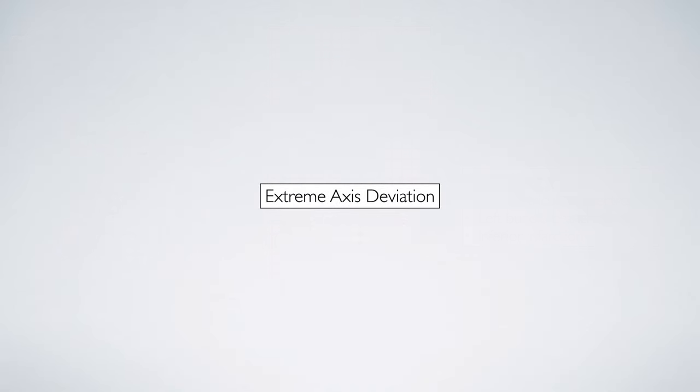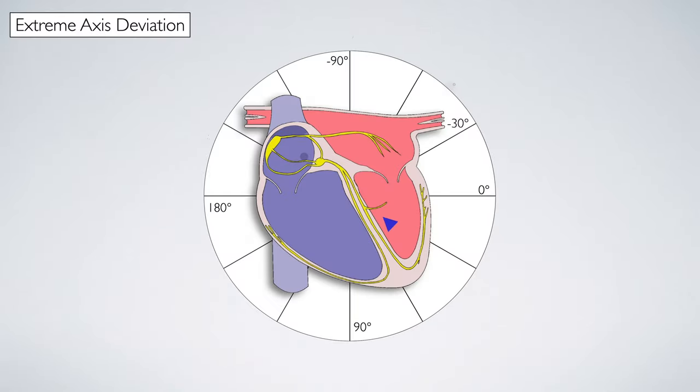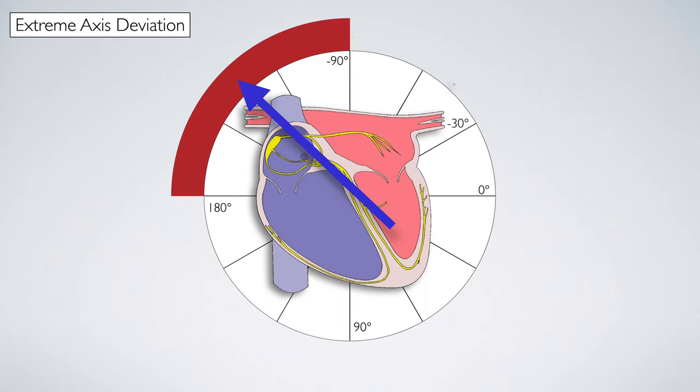Finally, let's talk about the extreme axis. This happens when electrical impulses originate from the ventricles and spread upwards and fall between minus 90 and 180 degrees.